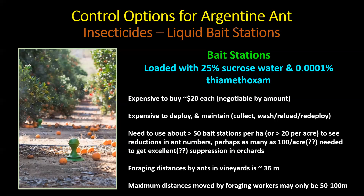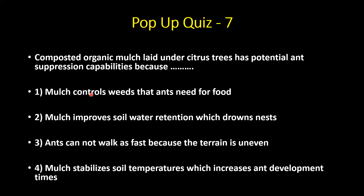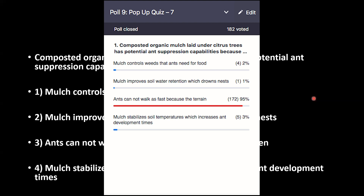Quiz: Why does composted organic mulch under citrus trees have potential ant suppression capability? The answer: the ants can't walk as fast because the terrain is uneven. That's the mechanism — mulch really slows ants down, slowing their ability to get into the canopy, get back to the nest, and return to the canopy.